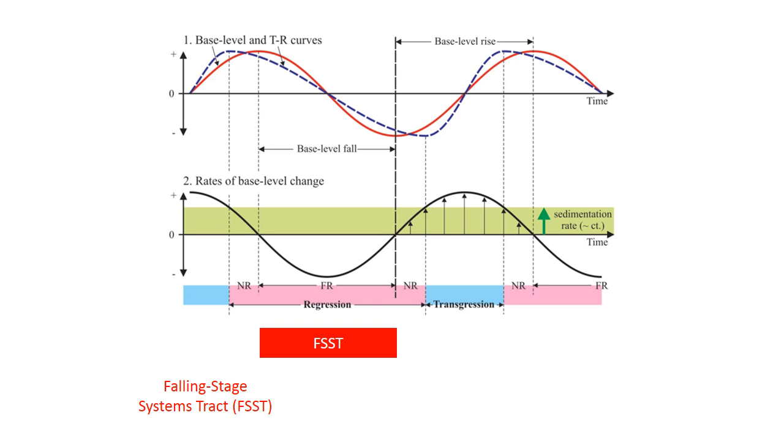So the time of forced regression during base level fall is called the falling stage systems tract, or FSST. It gets its name because base level is falling. The subsequent interval of normal regression is the low stand systems tract, or the LST. It occurs immediately following the lowest point on the base level curve during the initial part of base level rise, but still where the facies are prograding.